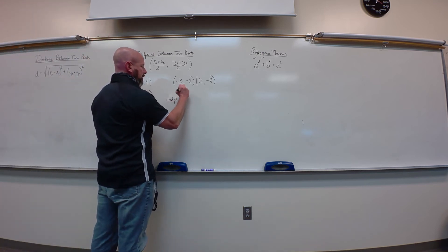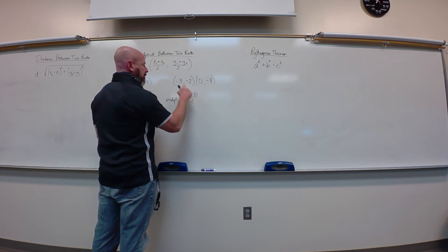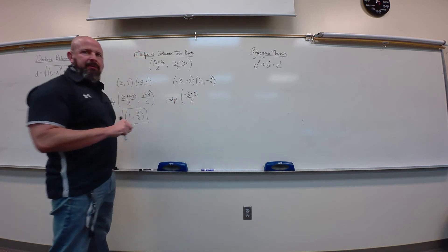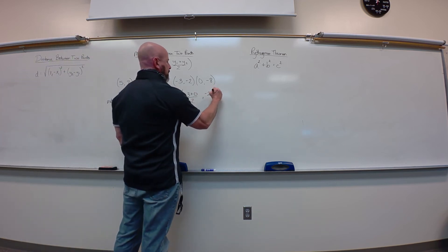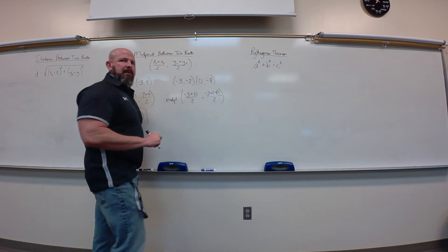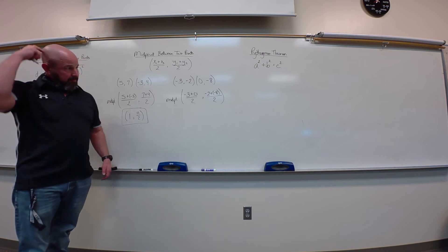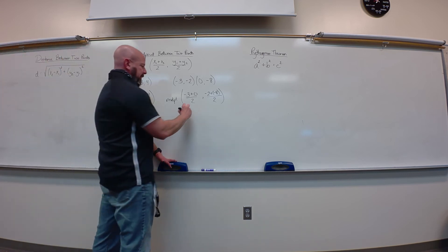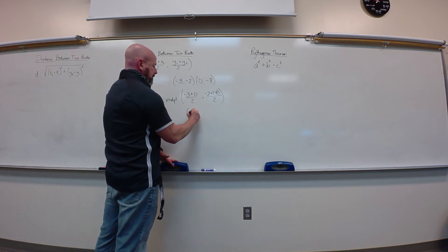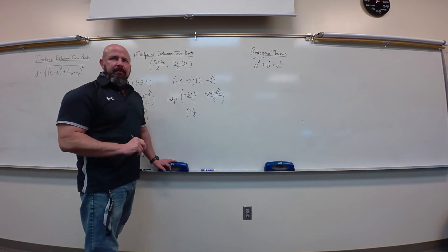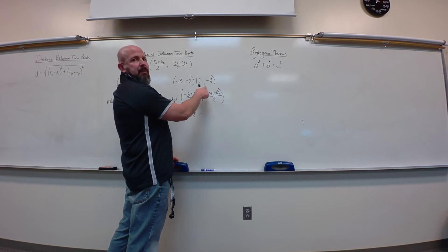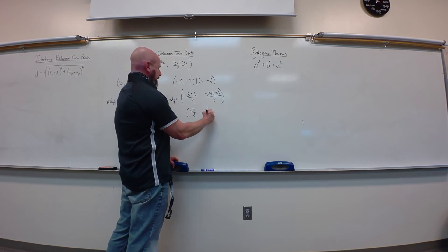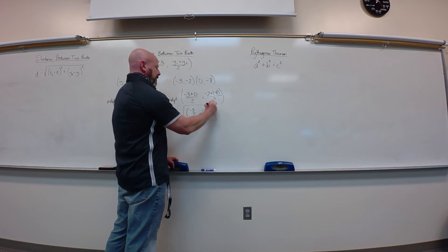So, midpoint. Negative three plus zero over two, add up my x's, divide by two. The y's, negative two plus negative eight, divided by two, add up my y's, divide by two. So, this will give me negative three halves on the first one, and again, decimals fine. This would be negative ten. Negative two plus negative eight is negative ten, divided by two is negative five. There's my midpoint.